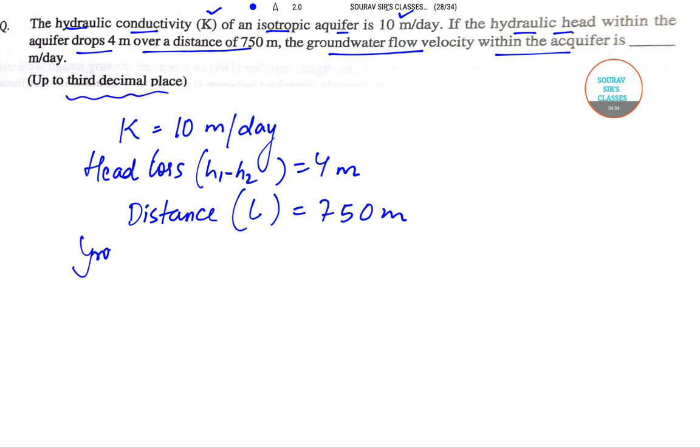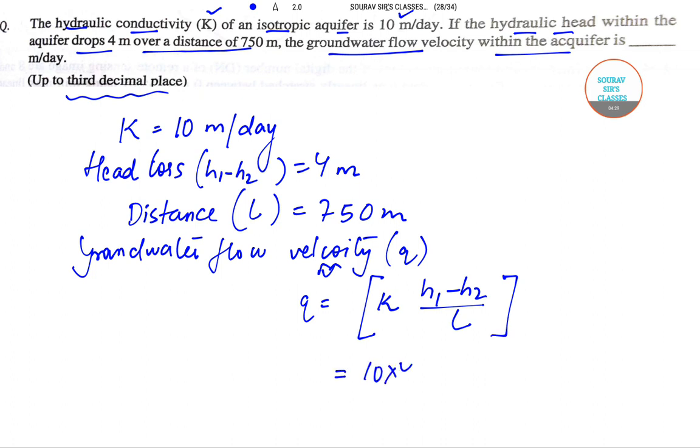The groundwater flow velocity Q is given by this formula: K into H1 minus H2 by L. This equals 10 into 4 by 750, we will get 40 by 750, and this value equals 0.0533 meter per day. This is the answer.